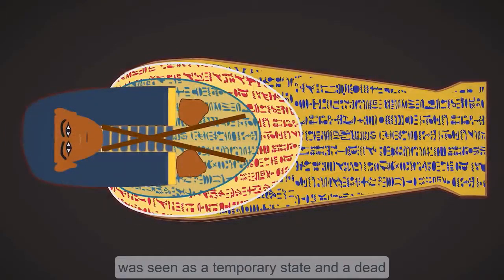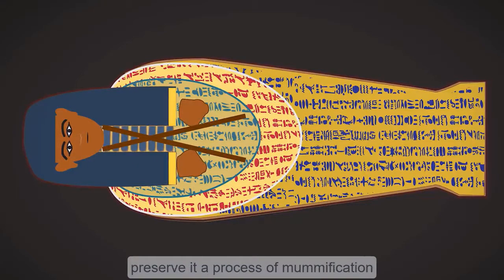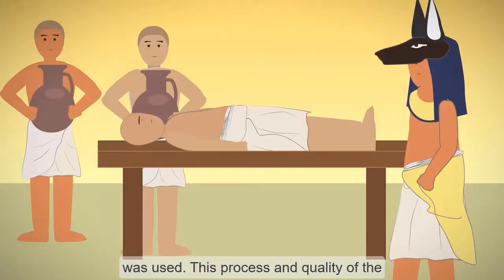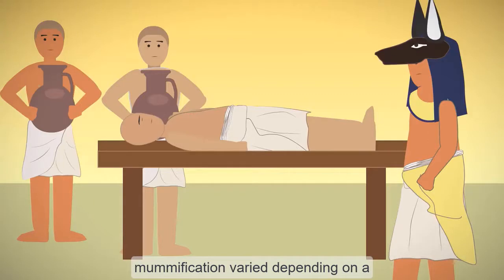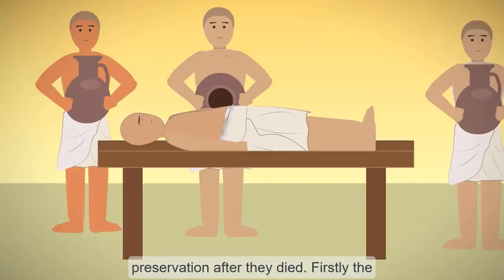Death was seen as a temporary state and a dead person's spirit needed a body, so to preserve it, a process of mummification was used. This process and quality of the mummification varied depending on the person's status and wealth. The highest ranks in society got the best method of preservation after they died.